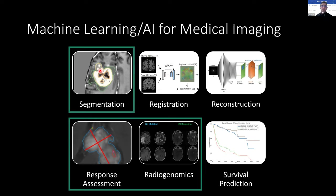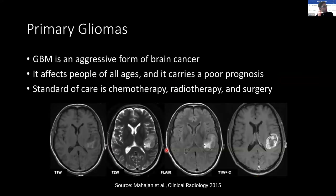Specifically, I'll discuss some examples of work from our lab in response assessment and radiogenomics. We'll begin with our work on segmentation of primary gliomas. Glioblastoma, or GBM, is a very aggressive tumor with dismal outcomes. Imaging plays a key role in the diagnosis, treatment planning, and response assessment for GBM. Thus, there's a lot of opportunity for sophisticated image analysis techniques that use AI and ML in the clinical care of patients with GBM.